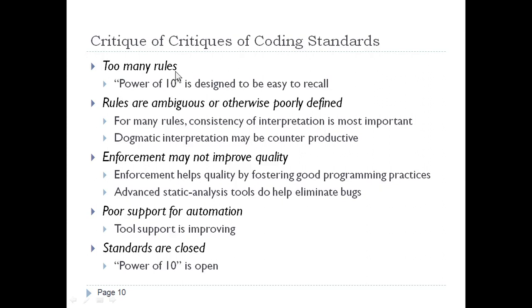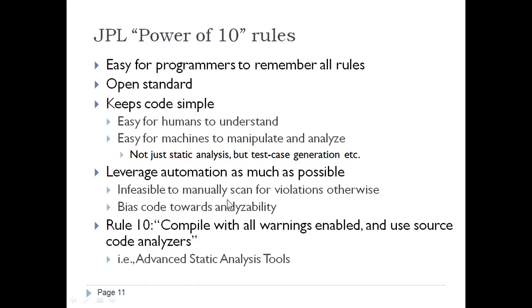Critics point to examples where enforcement may not improve quality and note poor support for automation — though support is improving. For closed standards, the recommendation is to use the Power of 10, which is open. The Power of 10 gives you a few focused rules to enforce, giving confidence that your software will work reliably.